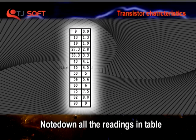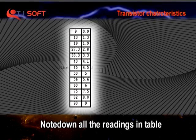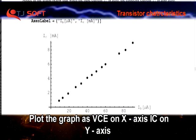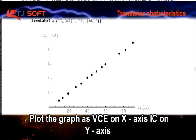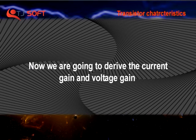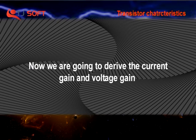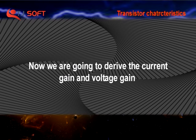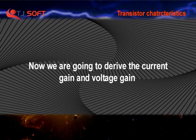Note down all the readings in the table and plot the graph with VCE on x-axis and IC on y-axis. Now we are going to derive the current and voltage gains.